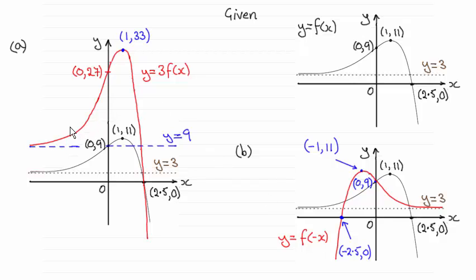So as you can see in part a, I'm assuming you're familiar with transformations of graphs. You can always check these out on my website if there are any problems. For something like this, when you've got a number in front of f of x, this represents a stretch parallel to the y axis of scale factor 3 in this case.